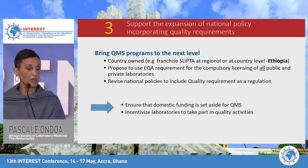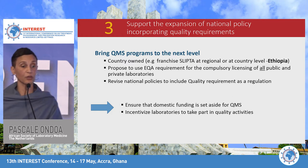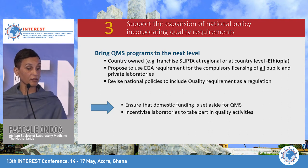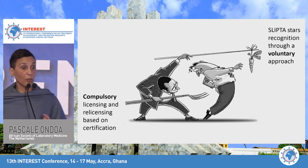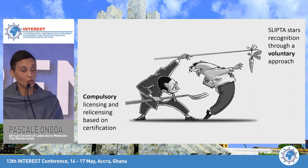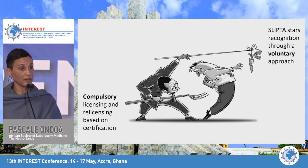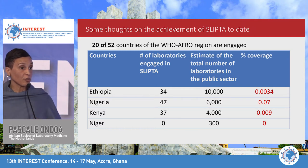We can propose using EQA requirements for the compulsory licensing of all public and private laboratories, and revise policies to include quality requirements as a regulation. That is the only way to set aside domestic funding for QMS and incentivize all laboratories to improve their quality. There are comparative advantages to using the carrot, the stick, or the force to incentivize laboratories to be certified or accredited as a way to be licensed.